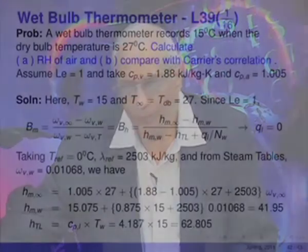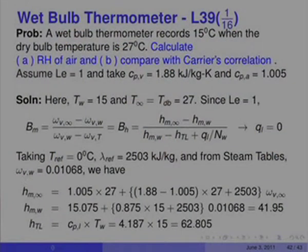Let us look at the first problem. A wet bulb thermometer records 15°C when the dry bulb temperature is 27°C. Calculate (A) the relative humidity of air, and (B) compare with Carrier's correlation. Assume Lewis number equal to 1, take C_p vapor equal to 1.88 and C_p air equal to 1.005. This problem can be solved using psychrometric tables or Carrier's correlation, but we shall apply our Reynolds flow model.